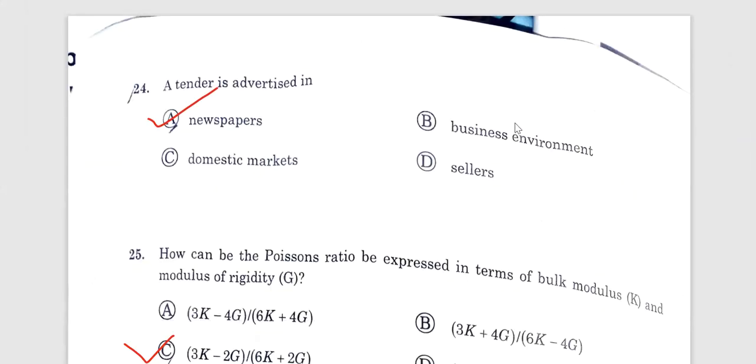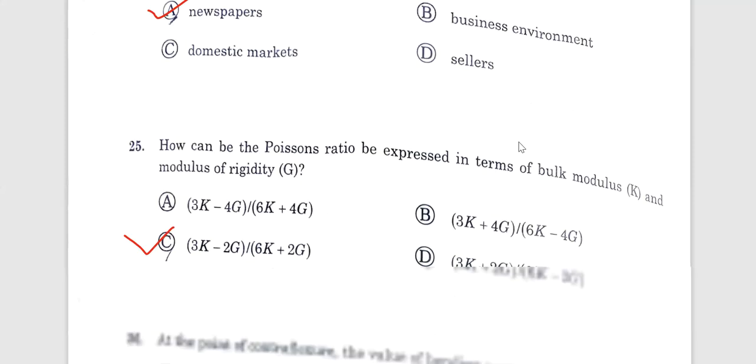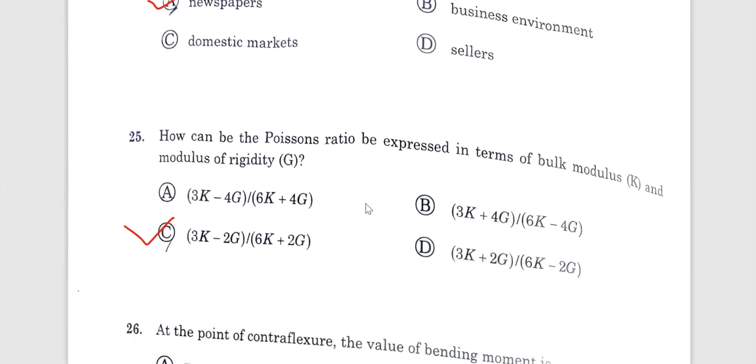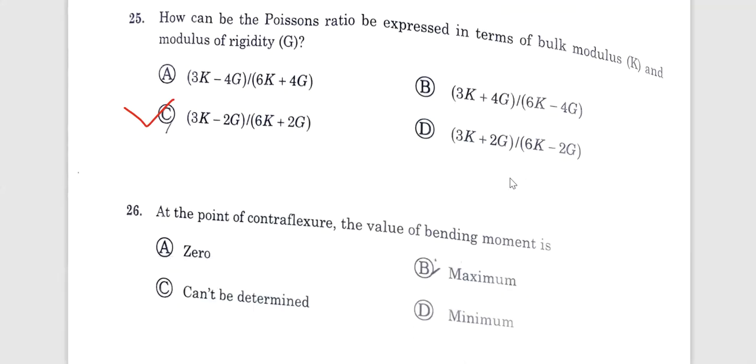Question number 24. Tender code is advertised in the newspaper. Question number 25. What is the relationship? Mainly bulk modulus of rigidity relationship is 3K minus 2G divided by 6K plus 2G. In the next part we'll go to question number 26 to question number 50. Thank you for watching.